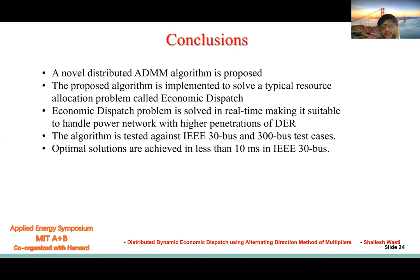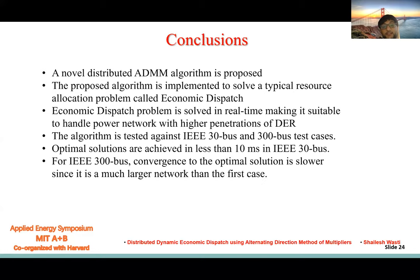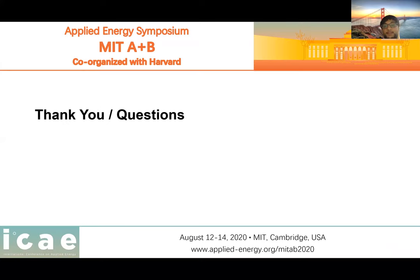We tested in 30-bus and 300-bus, and the optimum solutions are achieved in less than 10 seconds for 30-bus. For 300-bus, the convergence is a little slower than 30-bus because of the size of the network, but still it is achieved in less than a second. Thank you.